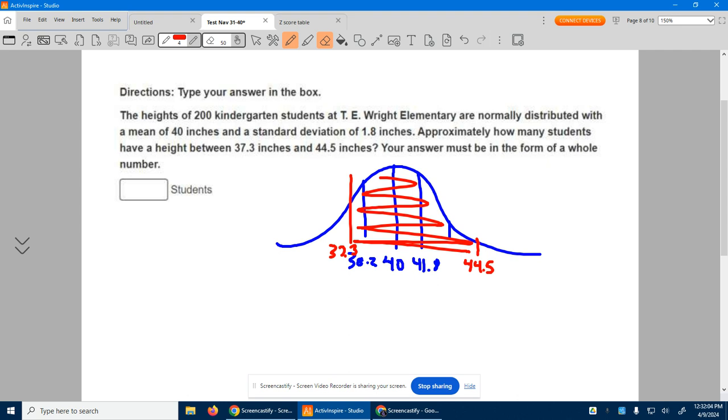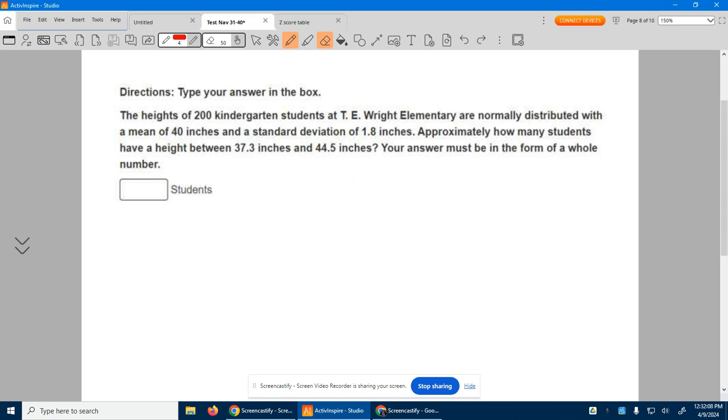We need to turn all this information into z-scores. So let's erase this. We've got to turn everything to a z-score. So let's go ahead and turn this first guy to a z-score. His z-score, where is he? Well, we start with 37.3, subtract the mean 40, divided by the standard deviation 1.8. This is going to give us a beautiful negative 1.5.